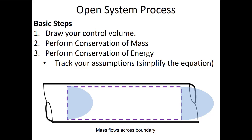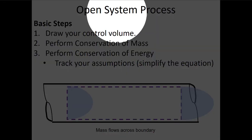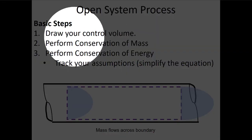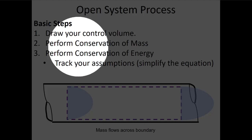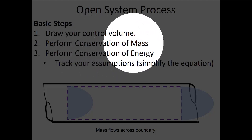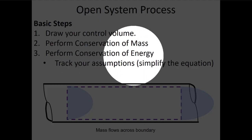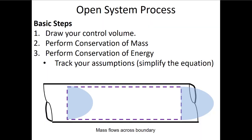We've been using thermodynamics to look at open systems, and the steps we generally want to follow are: number one, draw your control volume; number two, perform conservation of mass; then do conservation of energy. When doing conservation of energy, start with the whole version of the first law, and then cross terms out as you make simplifying assumptions.